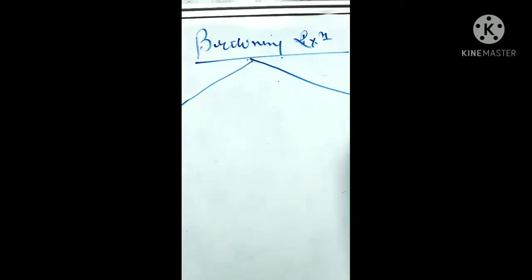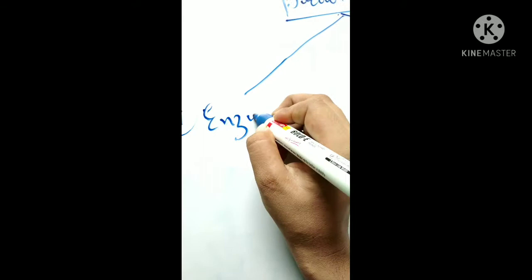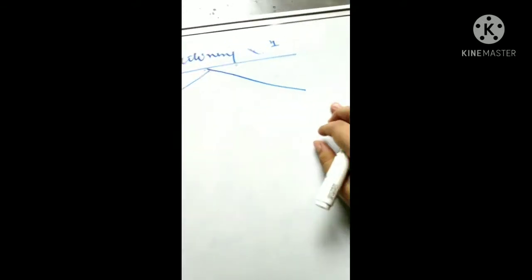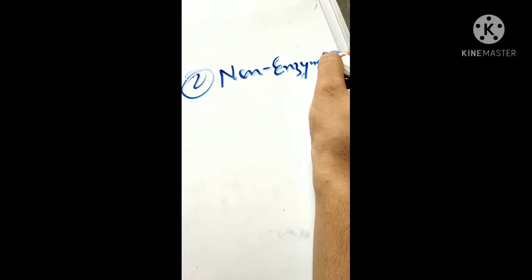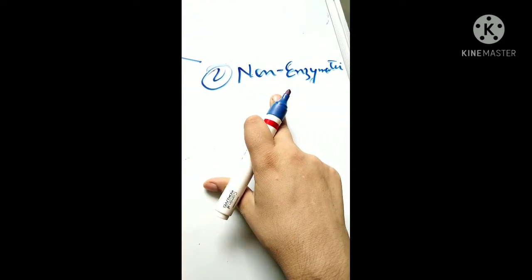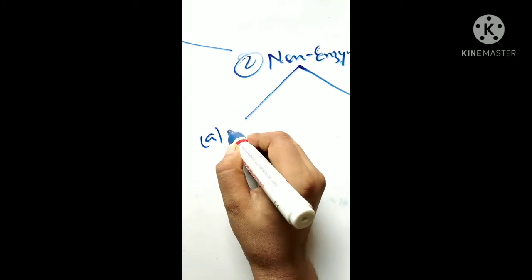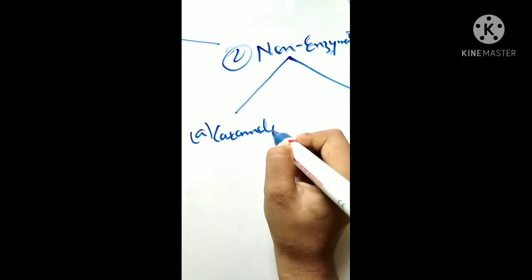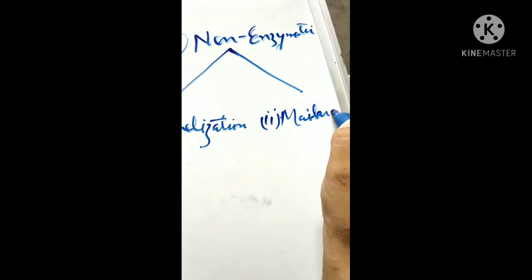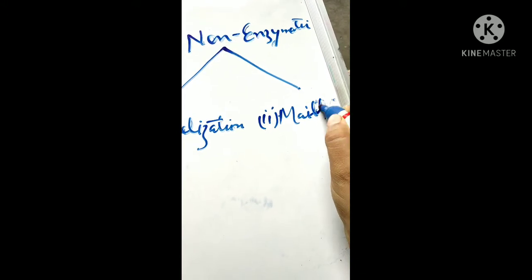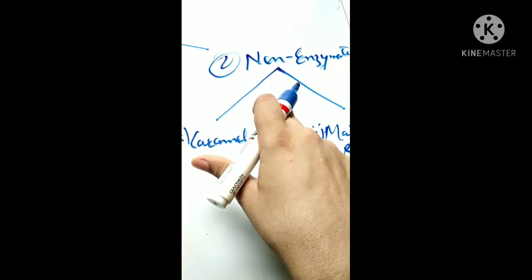This browning reaction is categorized into two: number one is the enzymatic browning reaction, and the second is the non-enzymatic browning reaction. This non-enzymatic browning reaction is further categorized into two — that is caramelization and the second is the Maillard reaction. This non-enzymatic part will be dealt with in the other video.